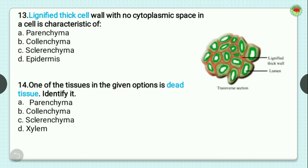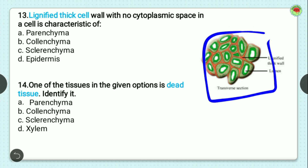Question number 13: lignified thick cell wall with no cytoplasmic space is a characteristic of? Options are parenchyma — a living tissue with thin cell wall — collenchyma — also has thin cell wall — epidermis, and sclerenchyma. Sclerenchyma is the correct option where you find a thick lignified cell wall with no cytoplasmic space. In the image the red color represents the lignified thick cell wall. Option C, sclerenchyma. Question 14 also asks for the dead tissue, and the answer is again option C, sclerenchyma.